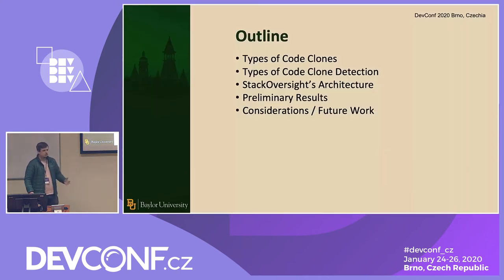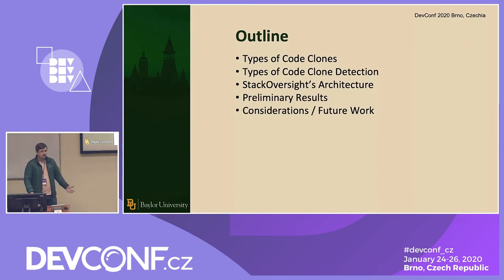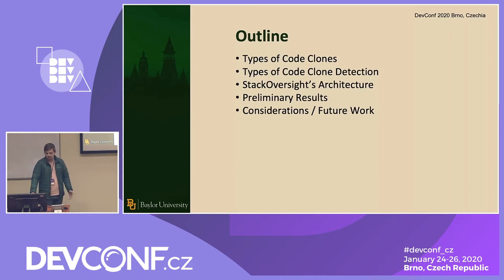So just an outline for the talk: I'm going to go over briefly the types of clones that you're going to find in your application, the types of code clone detection techniques that there are, then talk about the architecture of the tool Stack Oversight, and then discuss the preliminary results and future directions and considerations — because this is still kind of a working prototype, work-in-progress type tool.